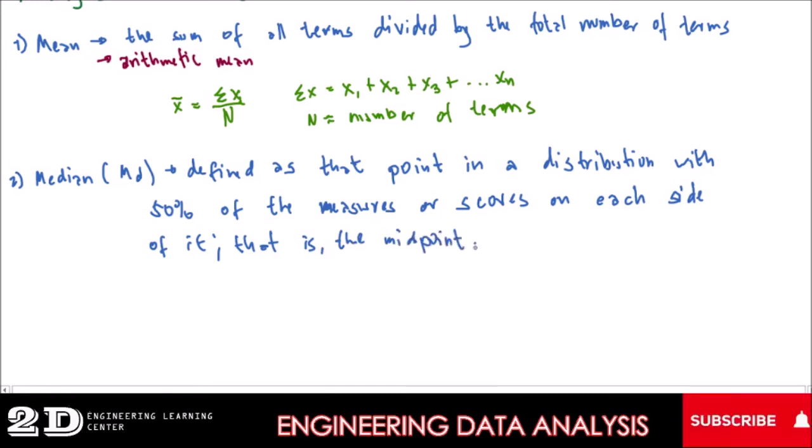that point in a distribution with 50% of the measures or scores on each side of it.